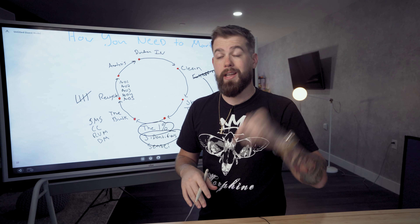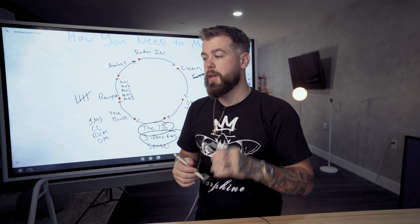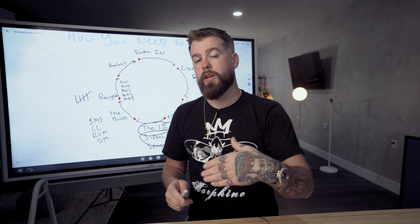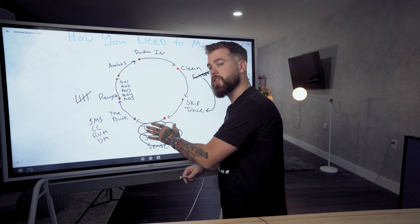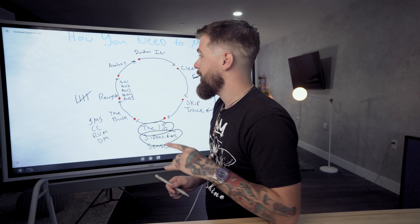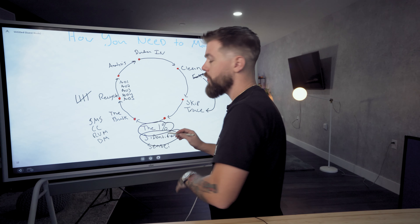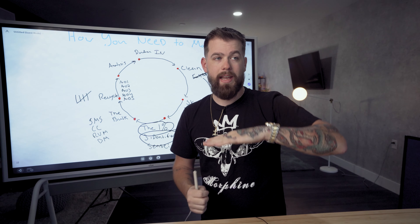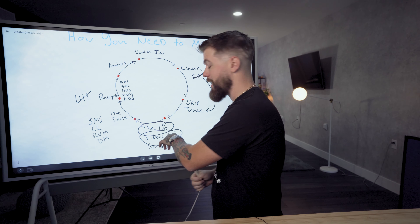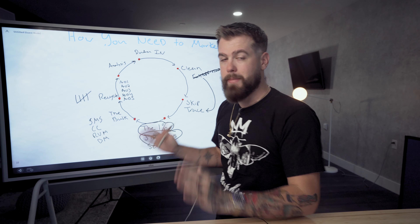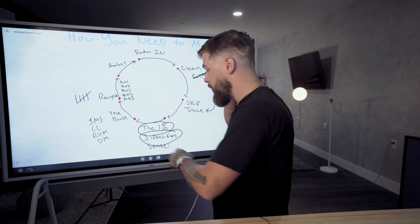That top one percent is typically defined by the top three identifiers — watch the Data Priority Pyramid video on the REIsift YouTube channel, which covers tier one, tier two, and tier three data. That one percent lives inside tier one data, along with your existing leads. Filter those out and follow what's called the Sensei Flow. We have a full diagram you can give a VA and they can execute it exactly just by looking at it — it's an SOP.